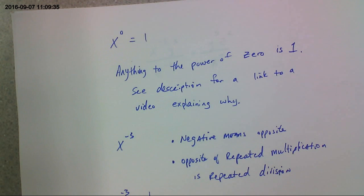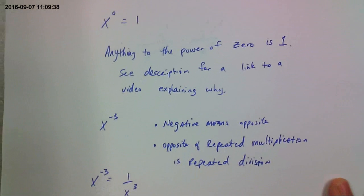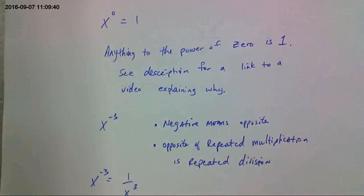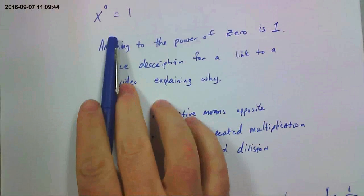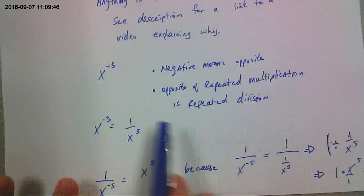Next thing we got, anything to the power of 0 is 1. I will show you, I will put a link in the description as to why that's true. It's kind of an interesting thing. All right. So that's just a rule. It doesn't matter what it is. Anything to the power of 0 is 1. Okay.